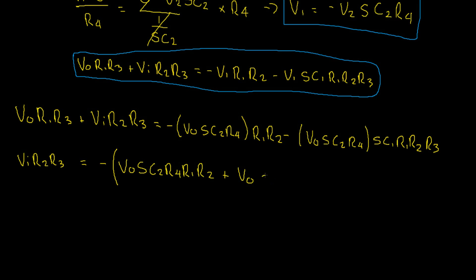Our S terms become S squared, C1 C2 R1 R2 R3 R4, plus our term that we subtracted, VO R1 R3. Remember, we did subtract this, but as we have the negative at the front of the brackets, that would distribute, making this negative VO R1 R3.